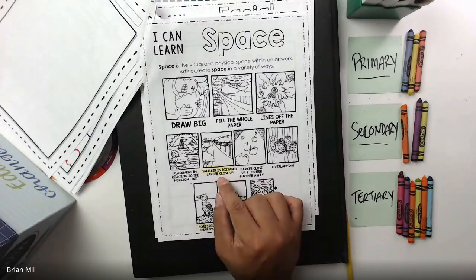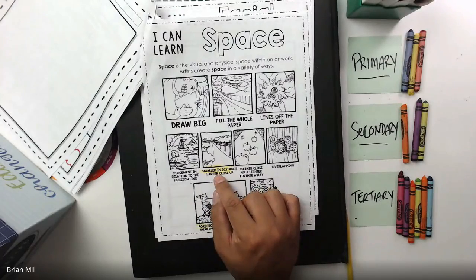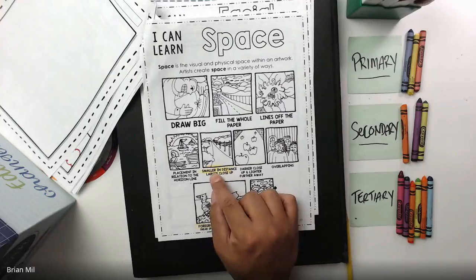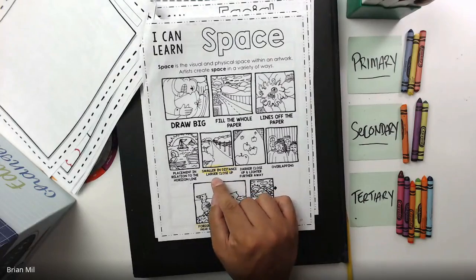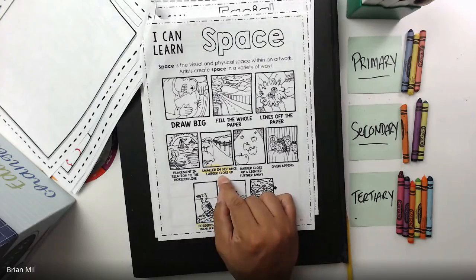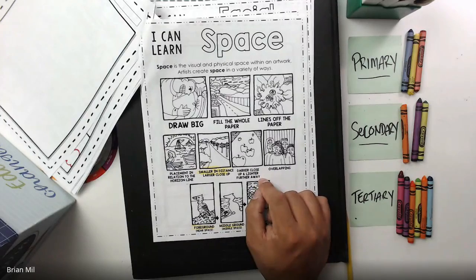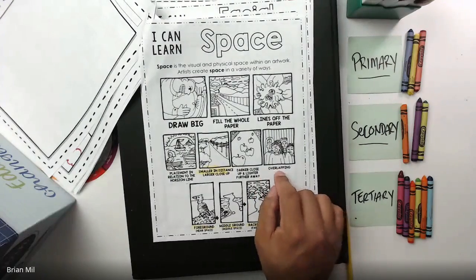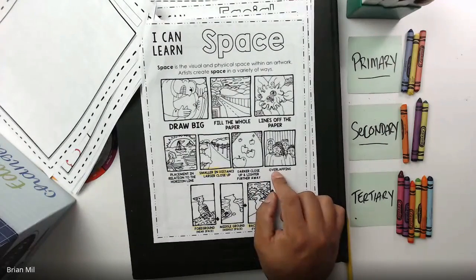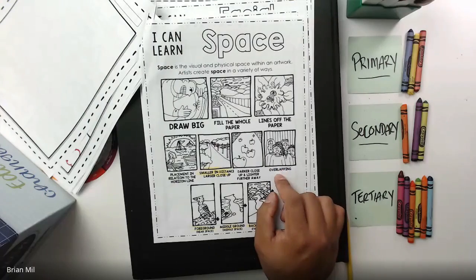I highlighted this next one because we're going to use it for our example on the next page. It's called going smaller in the distance and getting larger as it gets close up. The next one is darker close up and lighter further away. And this next one is very easy — we've done it before. It's called overlapping, which is when objects are either behind or in front of each other.